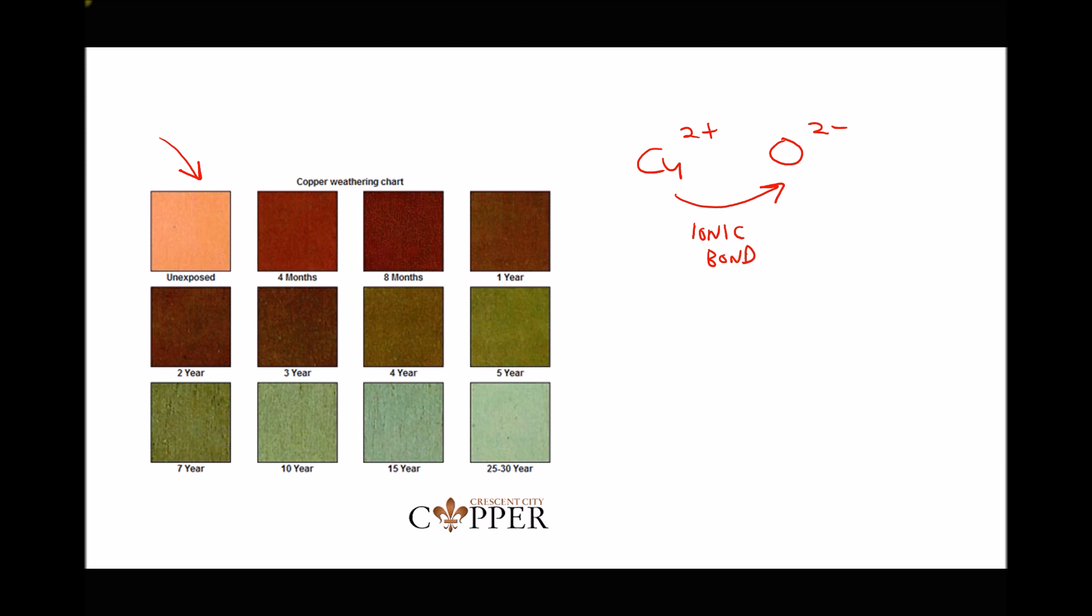Copper oxide is typically a dark brown or even a black color, but we can see that the weathering process continues. What actually happens is the copper oxide that's being formed combines with carbon dioxide. When it combines with CO2, what we get is copper carbonate. Copper carbonate has the chemical formula CuCO3 and it's copper carbonate that has this green color. It's called patina, and this process takes place over a very long period of time.